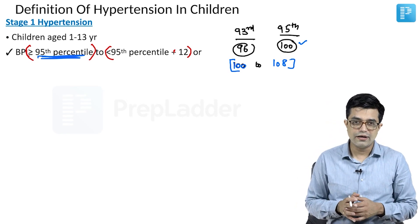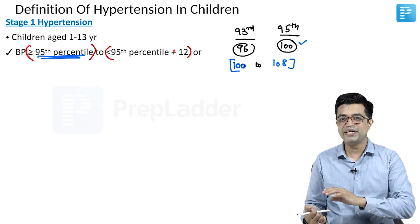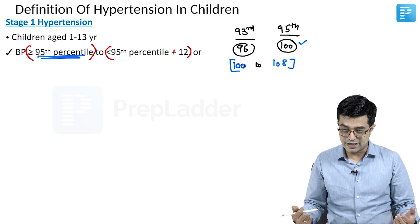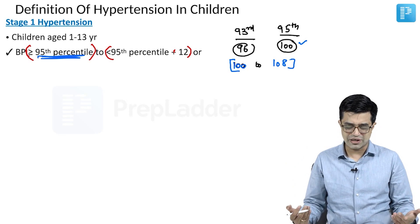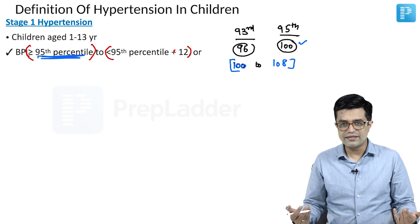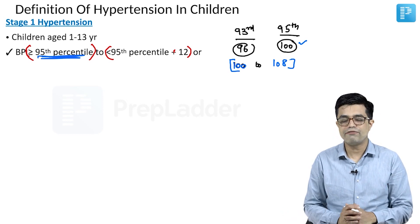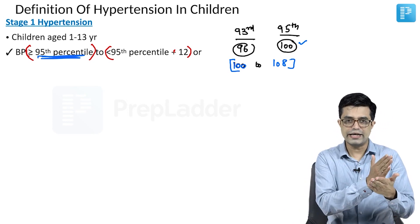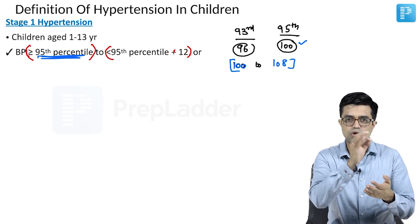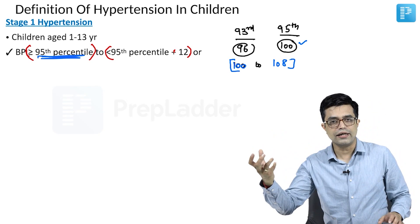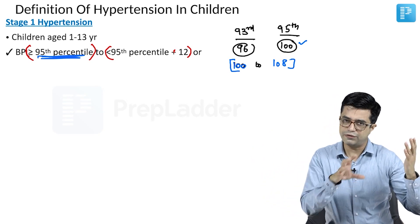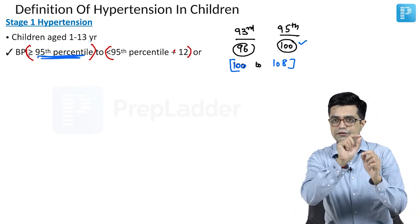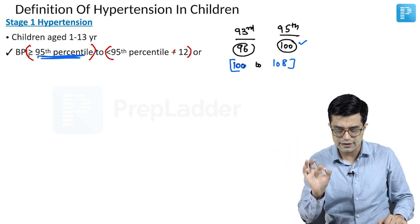The guidelines can be tricky to interpret. To clarify: if the BP value is between the 95th percentile (lower cutoff) and the immediate lower value before 95th percentile from the chart plus 12 (upper limit), then we call it Stage 1 hypertension. The value immediately below 95th percentile — whichever is given in the chart or table — is what you add 12 to in order to get the upper boundary.